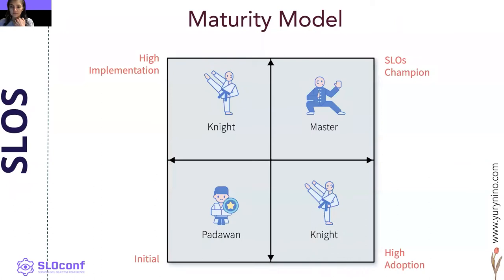The goal with this maturity model is to help move organizations toward an SLO-centric approach that provides teams with a common frame of reference they can integrate into conversations to improve business practices. We have defined two axes to move along: adoption and implementation.